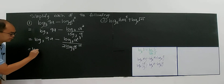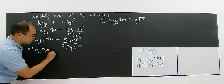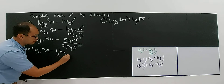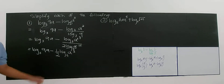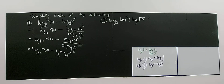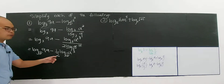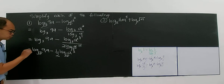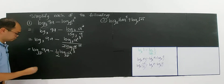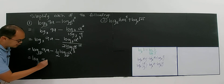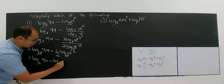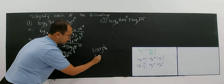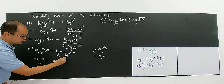So now I rewrite it — it becomes simpler. It becomes log 9A base 3 minus, with 1 over 2 in front, log A³ base 3. You have to remember that 1 over 2. Now you can see the bases are exactly the same. But there is a caution: you must make sure the coefficient here is 1. So 1 over 2 — you have to bring it forward as a power. It becomes log 9A base 3 minus log A^(3 × 1/2) base 3, which is A to the power of 3 over 2.